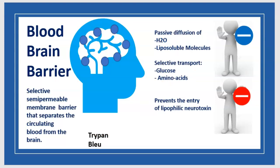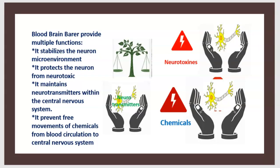What is the blood-brain barrier? It is a selective semipermeable membrane barrier that separates the circulating blood from the brain. It allows passive diffusion of water and lipid-soluble molecules, selective transport of glucose and amino acids, and prevents the entry of lipophilic neurotoxins. It stabilizes the neuron microenvironment, protects neurons from neurotoxins, maintains neurotransmitters within the CNS, and prevents free movement of chemicals from the blood circulation to the central nervous system.